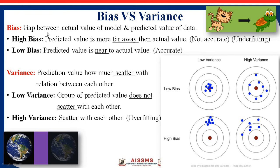The next concept is bias versus variance. In machine learning, bias means the gap between the actual value and the predicted value of the model, and variance means how much the predicted values scatter relative to each other. Bias has two types: high bias, where the predicted value is far from the actual value, and low bias, where the predicted value is near the actual value. Variance also has two types: low variance, where the group of predicted data does not scatter, and high variance, where the predicted data scatters widely.